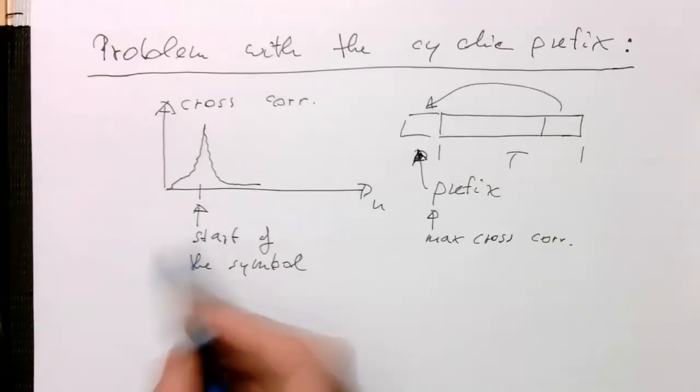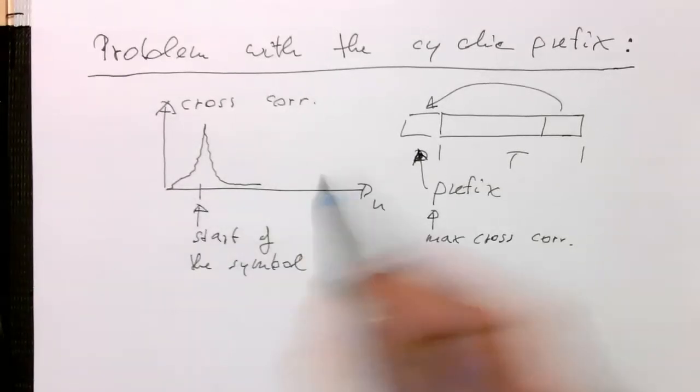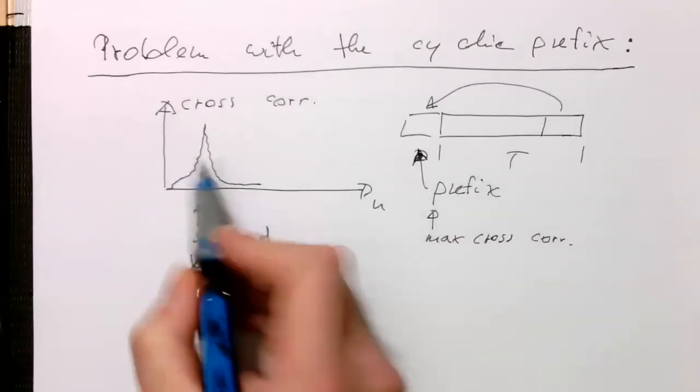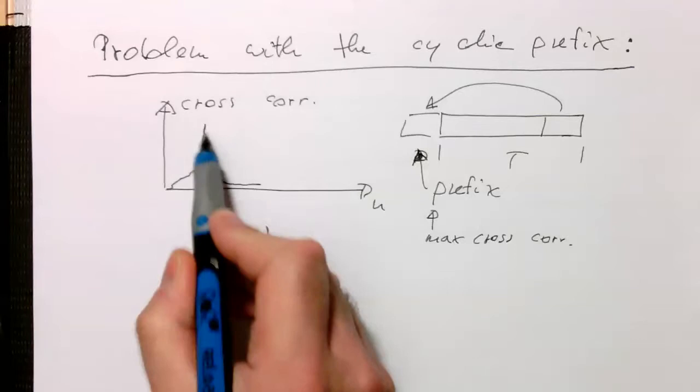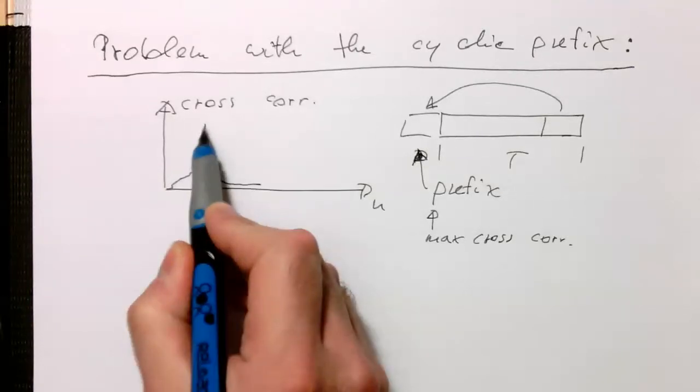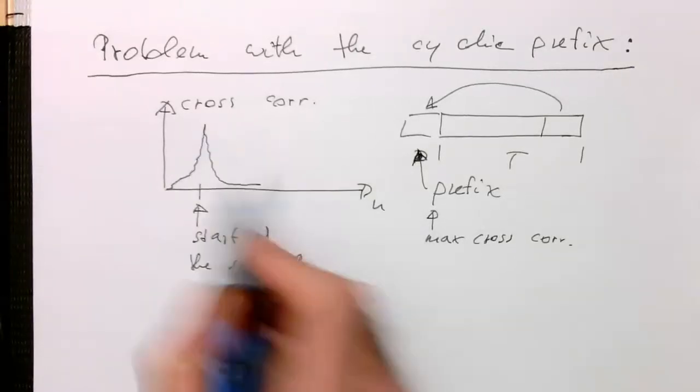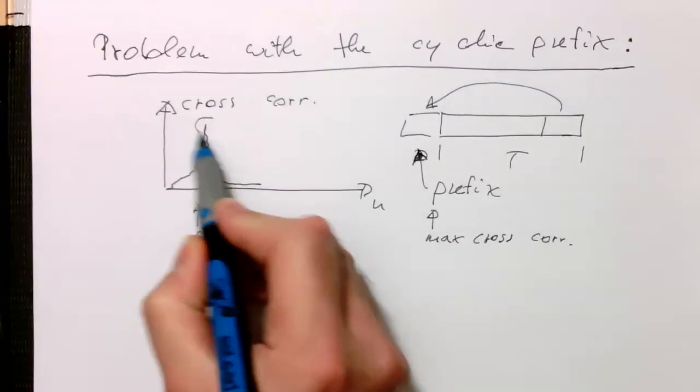Now the problem is, because this is randomized data, this peak will never be reaching its peak here exactly at one pixel or at one sample. So if we zoom in here...